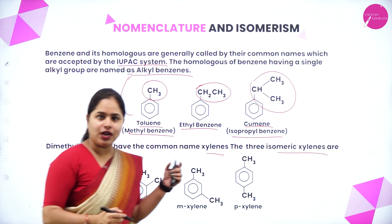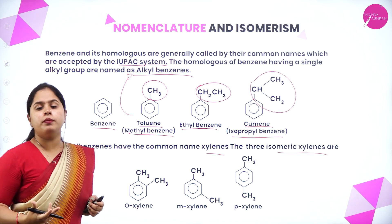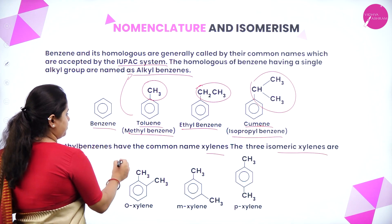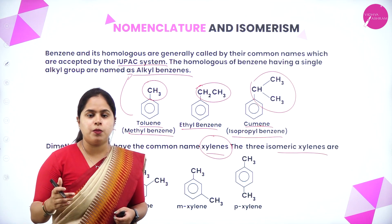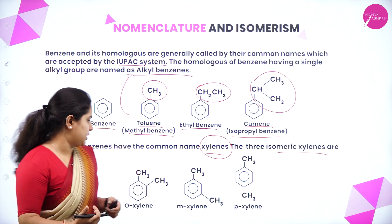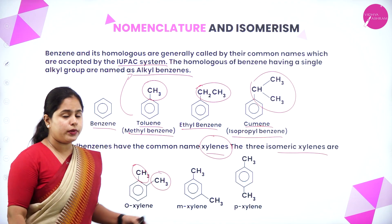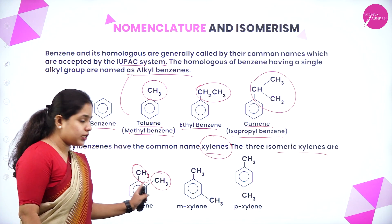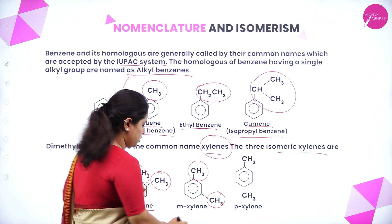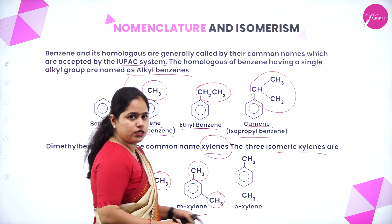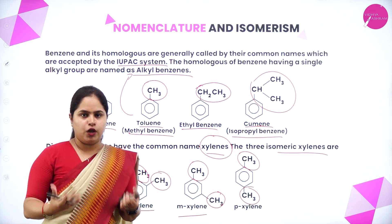Dimethyl benzenes have the common name xylenes. With one methyl group it is methyl benzene, but with two methyl groups it is called xylene. Based on the position of the methyl groups — whether ortho, meta, or para position — you have ortho-xylene, meta-xylene, and para-xylene. In ortho-xylene, the two methyl groups are on adjacent positions; in meta-xylene they are in meta position; and in para-xylene they are opposite each other.